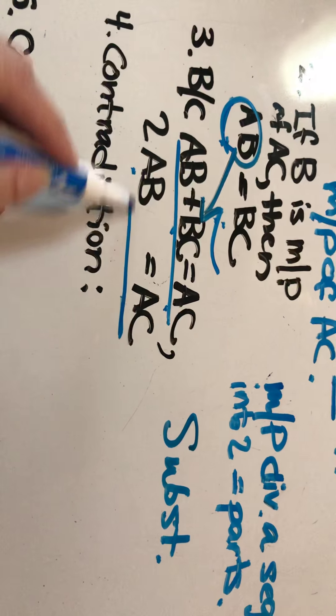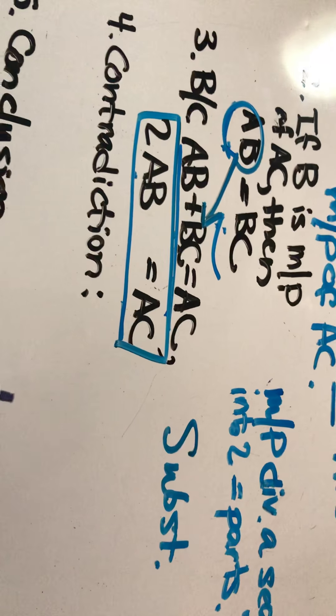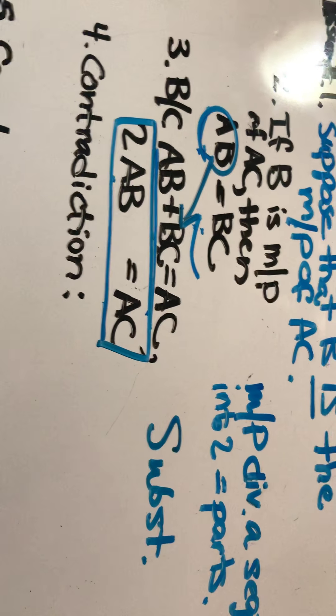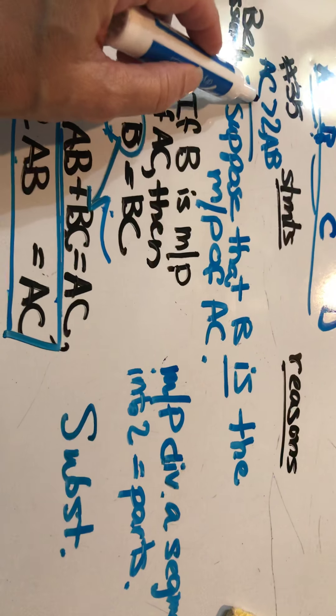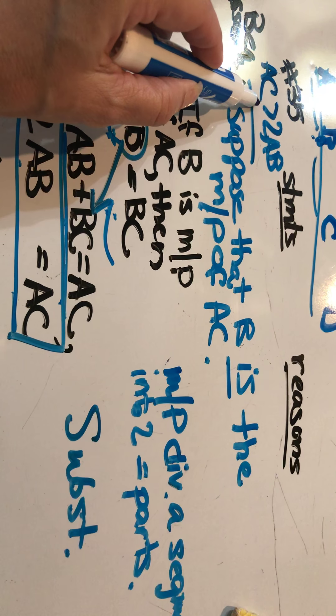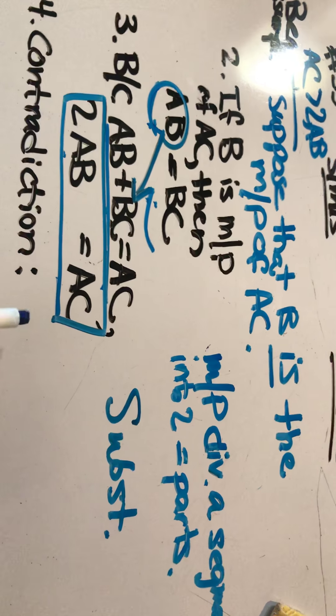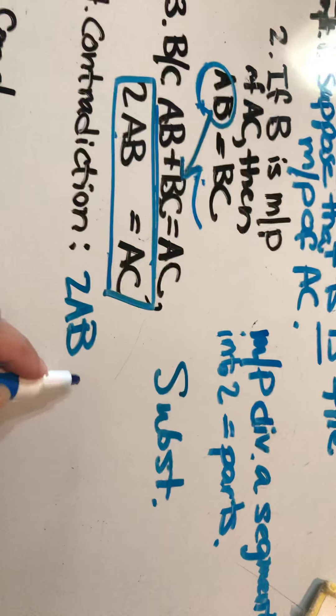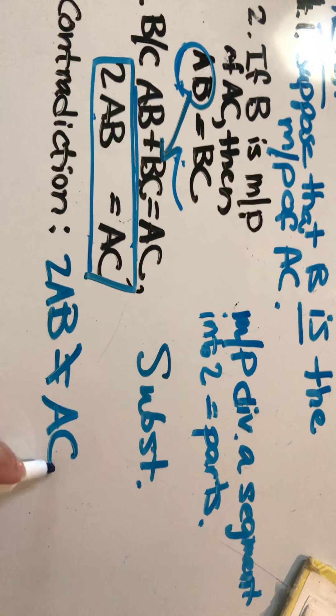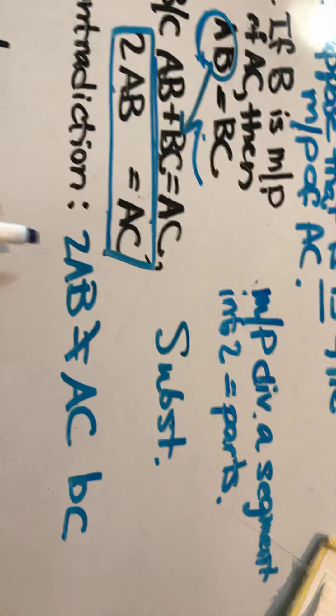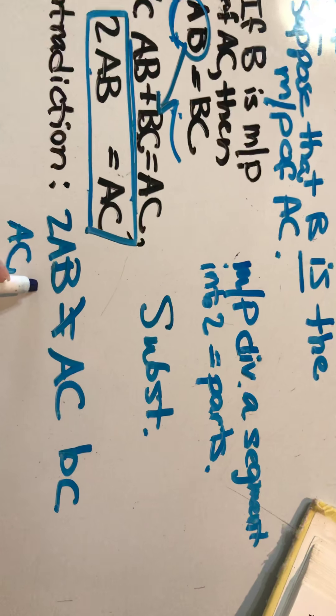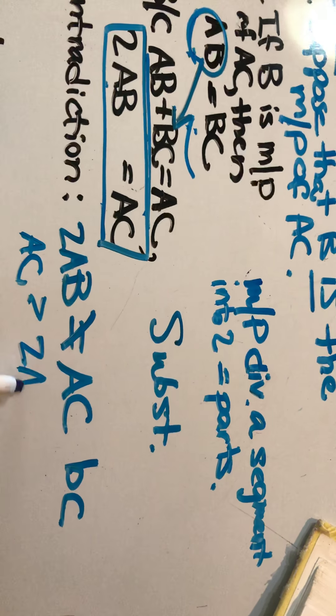Alright, now, what does this contradict, 2AB equals AC? It contradicts what was originally given. AC is greater than 2AB. So the contradiction is 2AB cannot equal AC because AC is greater than 2AB.